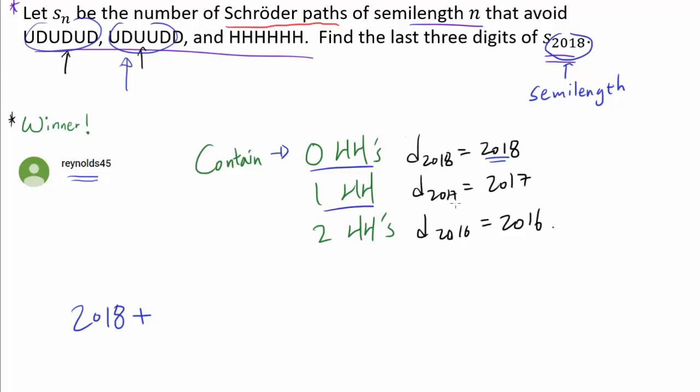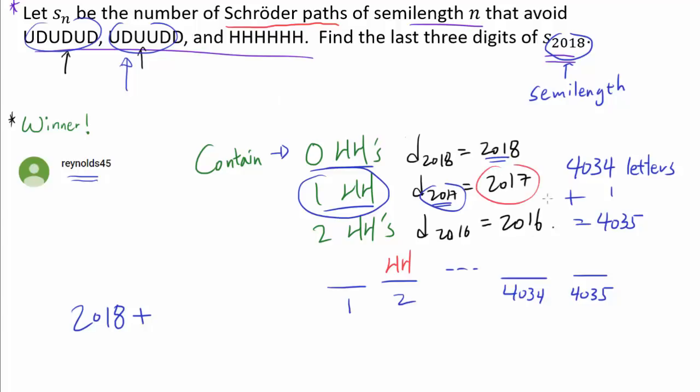The second one, we have one HH and we have a Dyck path of semi-length 2017. So we have here 4034 letters for the Dyck path 2017 times 2. And we have one more letter thinking of HH as one thing. So we have here 4035 letters to worry about. So how you can think about putting one HH is that we have 1 to 4035 spots. And we are picking one of them and putting in HH. And then in the rest of the spots, you are putting in a Dyck path, one of the 2017 Dyck paths that avoids UDUDUD and UDUUDD. So how can we count this? Well, we have 4035 choices to put HHs. And for the remaining spots, we have 2017 Dyck paths available.